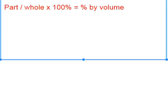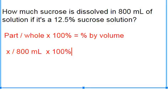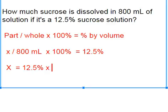If I plug in what I was just told and leave an X for what I'm being asked — I'm being asked how much sucrose, so I'm being asked for the part. And I'm being told the whole is 800 milliliters of solution. So if I rearrange this to solve for X, X is going to be equal to 12.5% times 800 milliliters divided by 100%, or you could just take 0.125 times 800 because you're rearranging the equation.